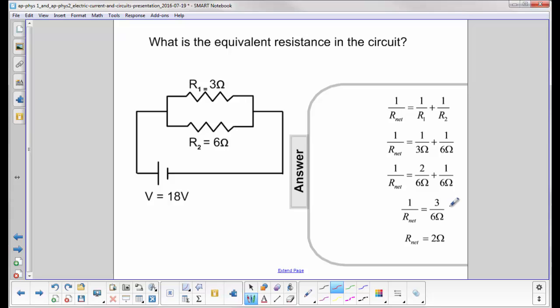Be careful, that is not your answer. That's what 1 over R net is. You have to flip the answer at the end. So the net resistance of this circuit is 2 ohms.